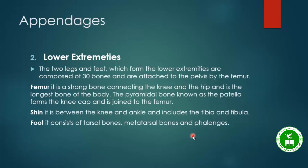The two legs and feet, which form the lower extremities, are composed of 30 bones each and are attached to the pelvis by the femur. The femur is a strong bone connecting the knee and the hip, and is the longest bone of the body.